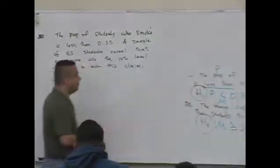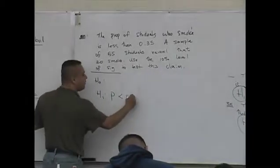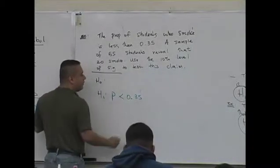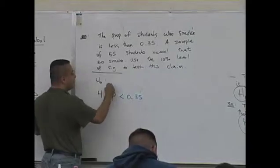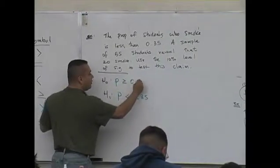First step: p less than 0.35. We already talked about that. What's the opposite of that statement? P greater than or equal to 0.35.